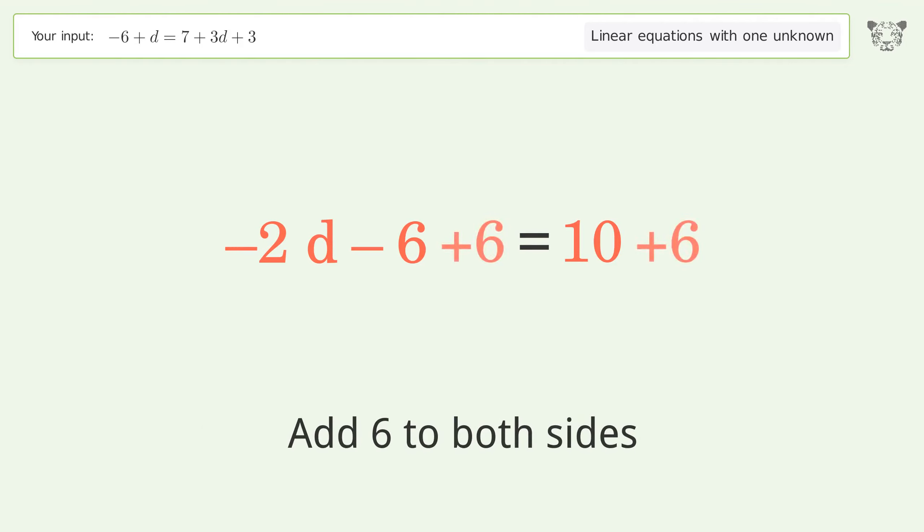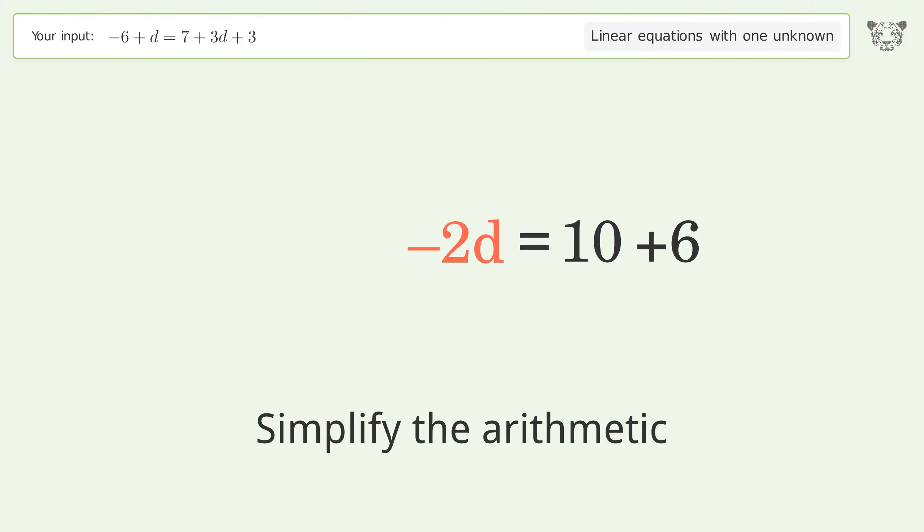Group all constants on the right side of the equation. Add 6 to both sides. Simplify the arithmetic.